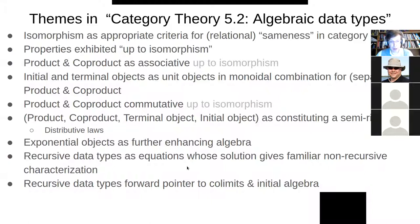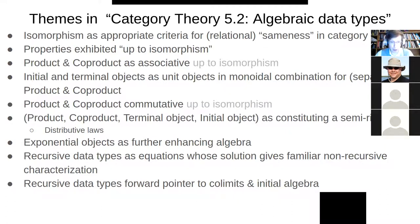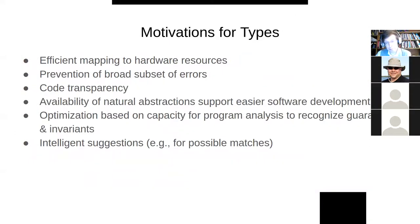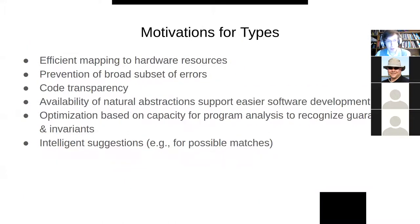Recursive data types can be viewed as equations that can be solved, often in a way that leads to an arbitrarily long structure. There's a forward pointer here to our work with co-limits and initial algebras or co-algebras, which we'll be seeing in a number of weeks. There's a notion of a fixed point there.